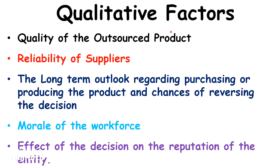Certain qualitative factors which we have to keep in mind while making Make or Buy decisions. Quality of the outsourced product and reliability of supplies are very important because if there is damage or any delay in delivery, it's our image that is going to be tarnished and not the supplier's. The long-term outlook regarding purchasing or producing the product and chances of reversing the decision should be considered. Morale of the workforce is very important because if you are outsourcing, the workforce related to that product might have to be retrenched, affecting their morale. They form the foundation of the organization. Also consider the effect of the decision on the reputation of the entity.